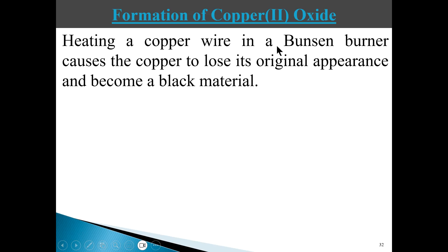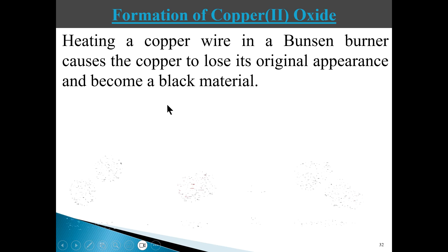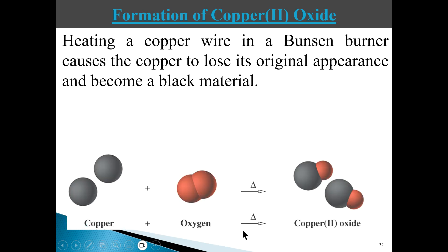For example, if you heat a piece of copper wire in air, copper has a characteristic reddish-brown shiny appearance, but if you heat it long enough, a black material is produced. A change in color is one of the things you look for in a chemical change. We can represent this using: 2Cu + O2 → 2CuO, where the copper atoms and oxygen atoms react to form copper-2-oxide, a new substance.